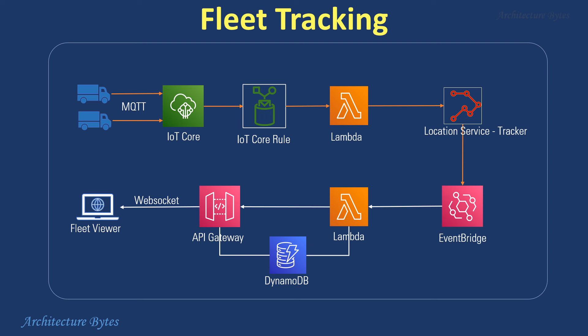EventBridge captures the event and sends it to a Lambda function, which sends messages to the Fleet Viewer application clients via API Gateway WebSockets. The Fleet Viewer application then receives and plots the truck fleet on a map. Note that the WebSocket connection IDs are saved in DynamoDB.